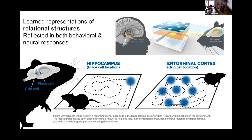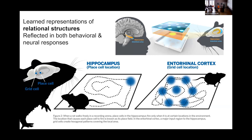It's also very important to note that this is not just about physical space — it's also about social space and conceptual space. Studies have shown that if you're navigating a 'stretchy bird' space where one axis is leg length and the other is neck length, you again have prefrontal and hippocampal regions corresponding to it as you navigate that space.